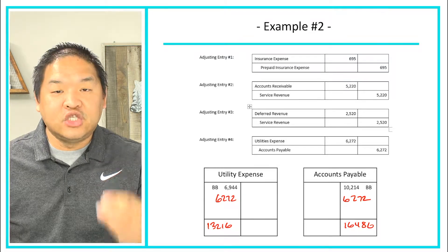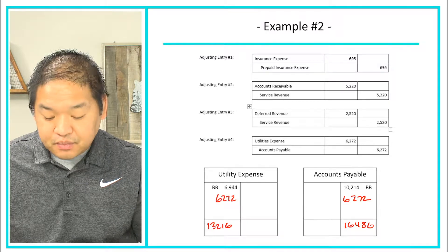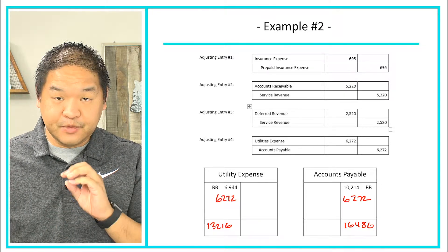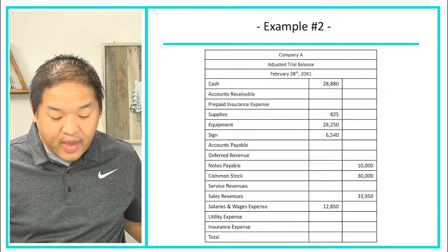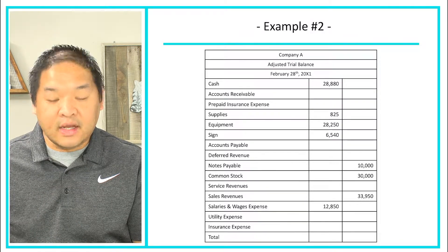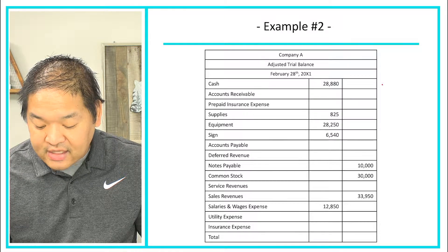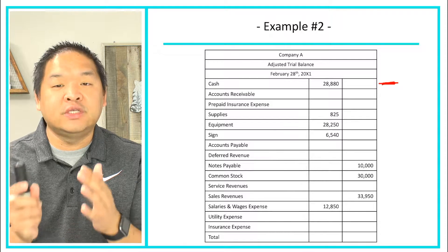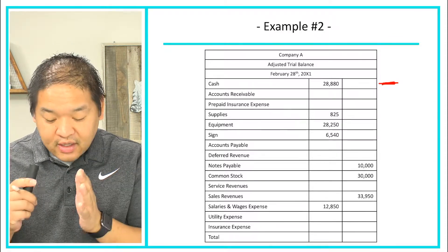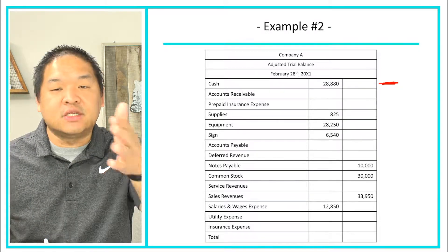Now we've posted all of our adjusting entries. Once we post all adjusting entries to the T-accounts — the general ledger — we can prepare the adjusted trial balance using the new balances we've just calculated. Everything else in black does not change with these adjusting entries. Notice that cash has not changed, because we said adjusting entries do not impact cash. So cash should not change going from the unadjusted to the adjusted trial balance.